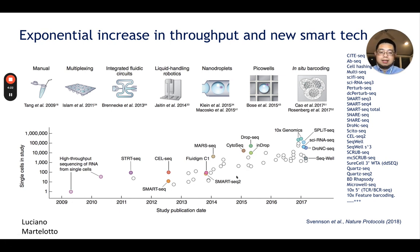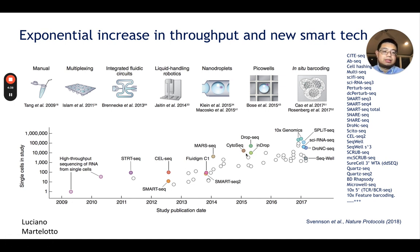Single-cell RNA sequencing throughput has increased exponentially over the years. The first sequenced single cell can be traced back to 2009, but later technologies can sequence tens of thousands of single cells. New tools and technologies are coming out almost every week, and the best practices for analyzing single-cell RNA sequencing data are also changing periodically.